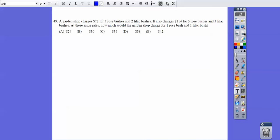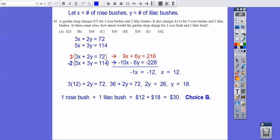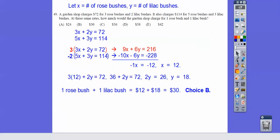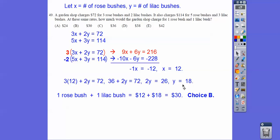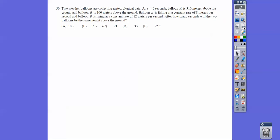A garden shop charges $72 for three rose bushes. I set up a system of equations. Three rose bushes plus two lilacs equals $72. Five rose bushes plus three lilacs equals $114. So solve the system of equations. It's asking how much does one rose bush and one lilac bush cost. So find out what x is, find out what y is, add them together, and we get 30 bucks.